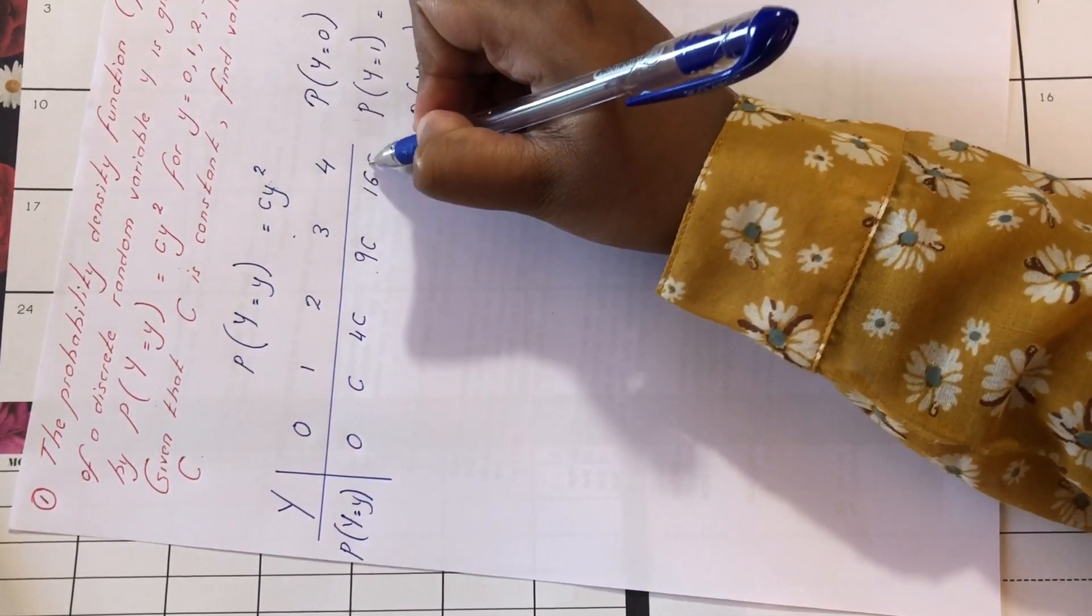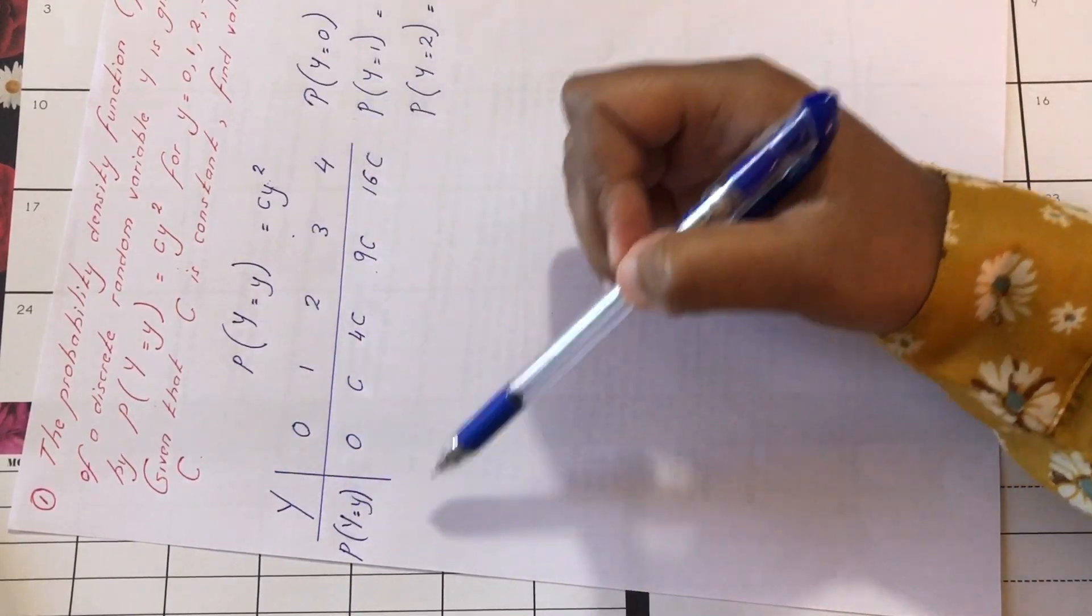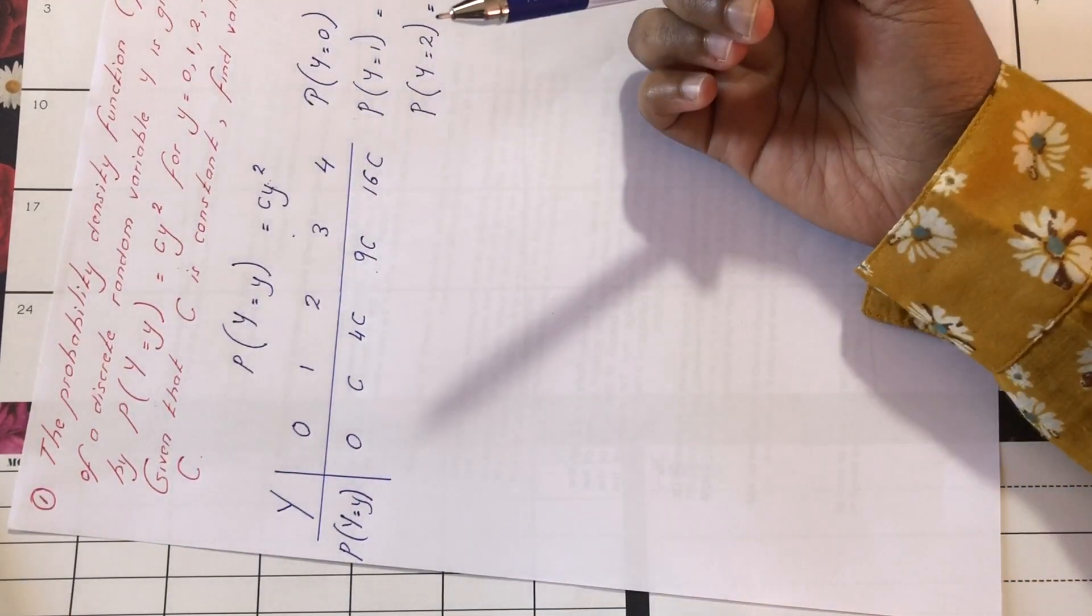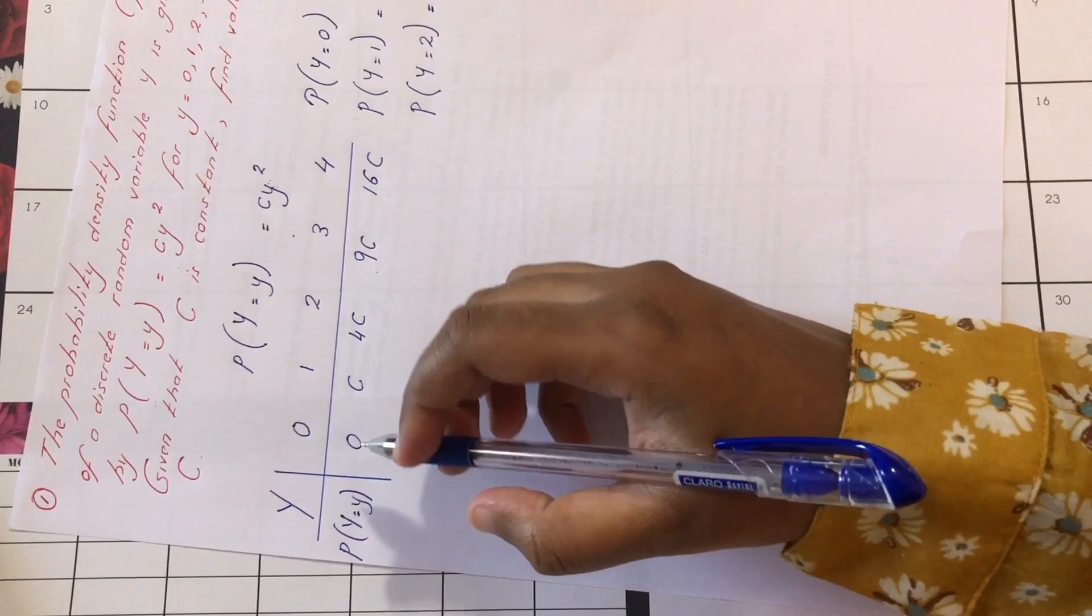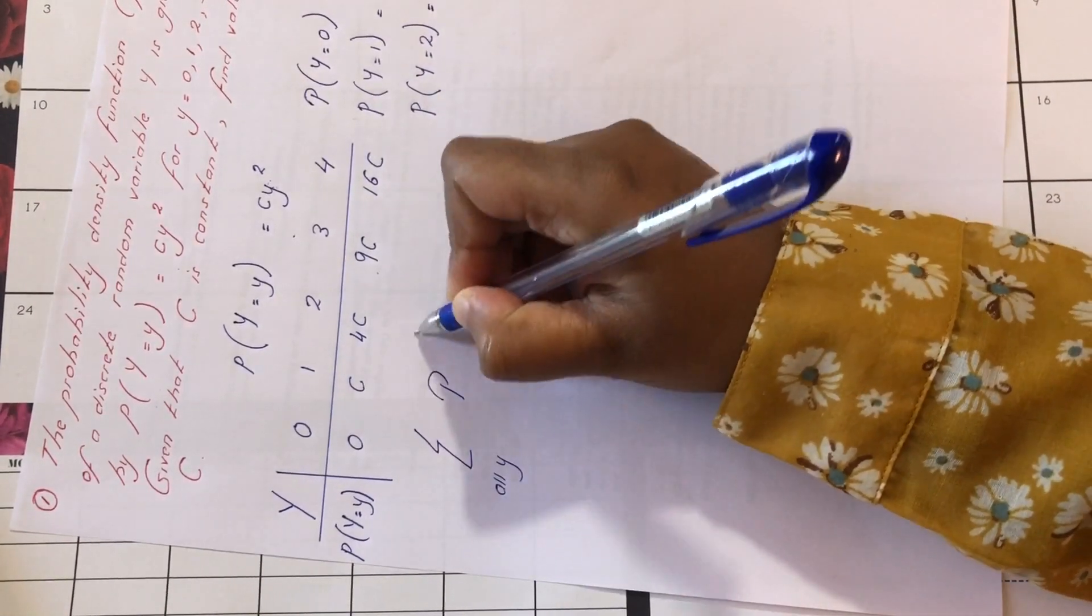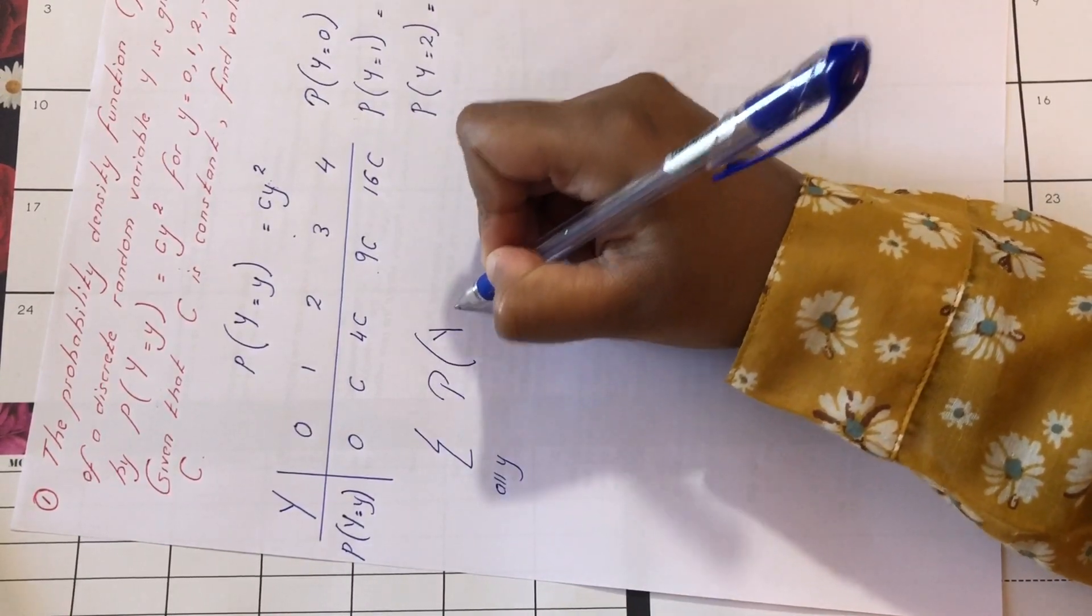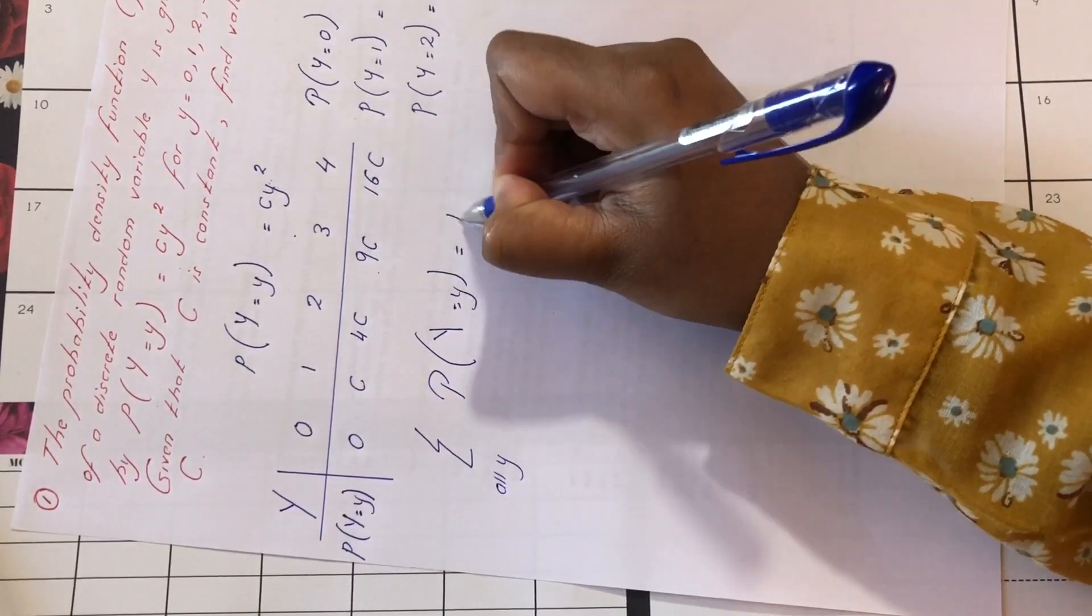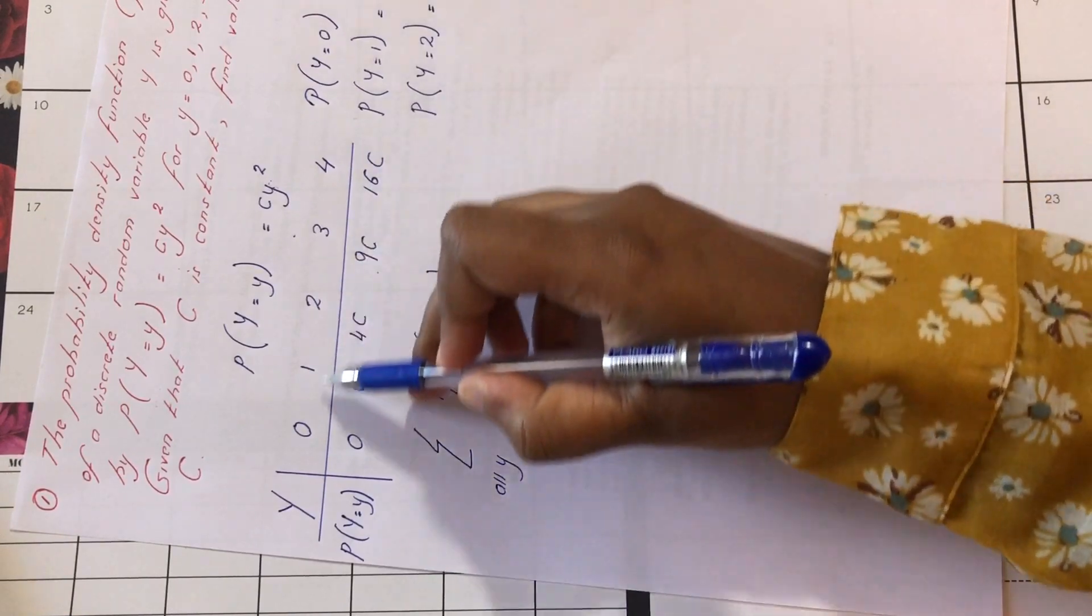Now let's see if this random variable y is well defined. Now we know that summation of all values of y, probability of y equals y is equal to 1.